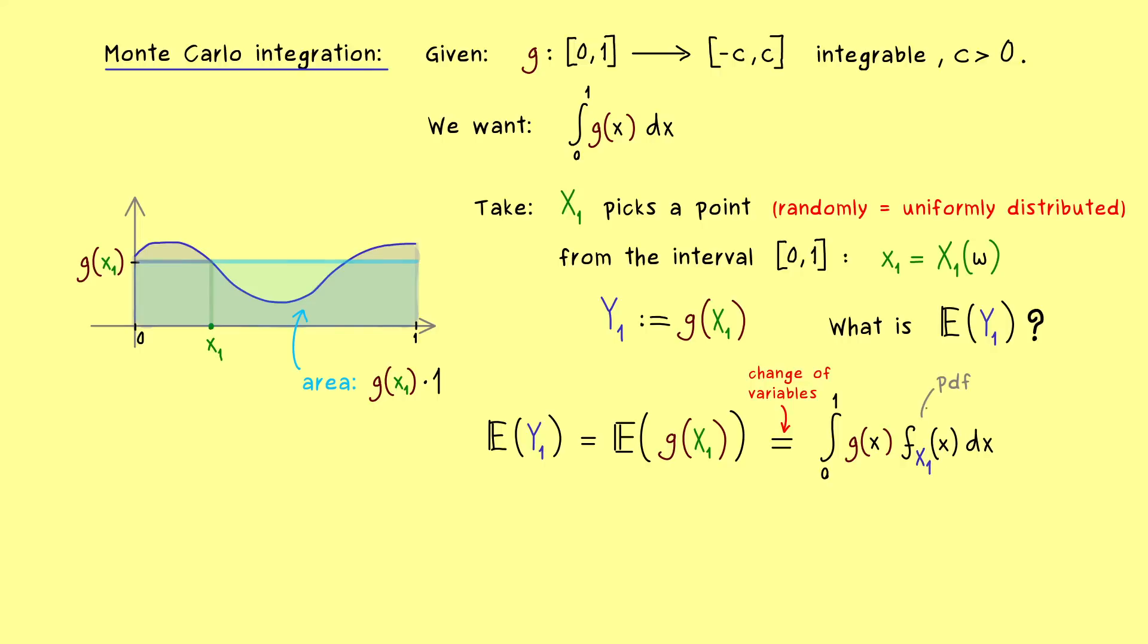And then inside we have the function g times the probability density function of X₁. And you know for the uniform distribution this pdf is just a constant function on the unit interval. Hence we just have that this function is equal to 1 here. So in conclusion the expectation is exactly what we want to have, it's equal to the integral of g.